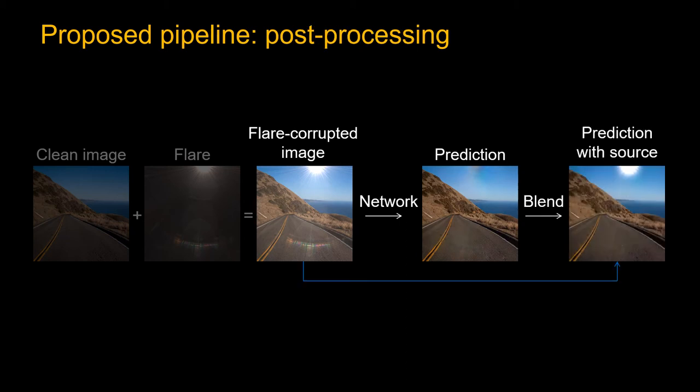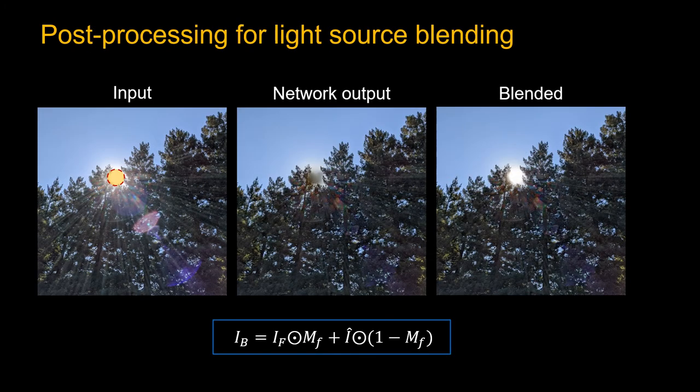Finally, we blend the input light source back into the predicted image. We create a mask based on the saturation region and keep those saturated pixels in the final blended image. This makes the final output look more realistic.